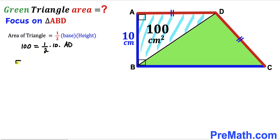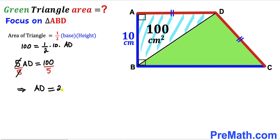So we have 5 times AD equals 100. Dividing both sides by 5, side length AD turns out to be 20 centimeters.